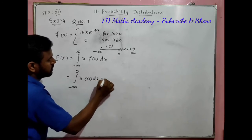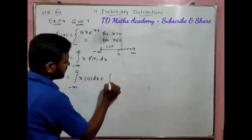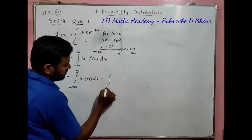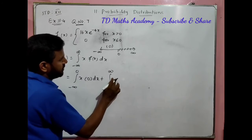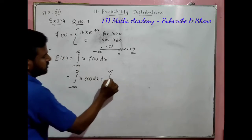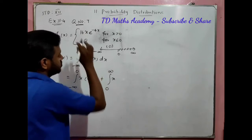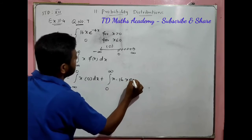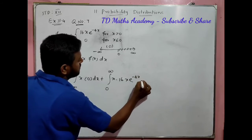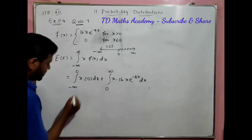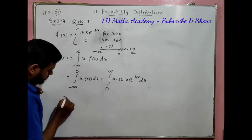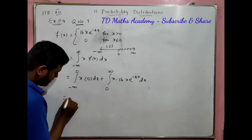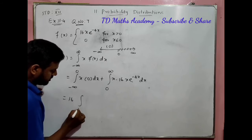Integration from 0 to infinity: x times f(x), where f(x) is 16x e^(-4x) dx. The first part from minus infinity to 0 gives 0. So 16 is constant, and we have integration 0 to infinity.